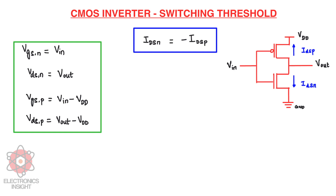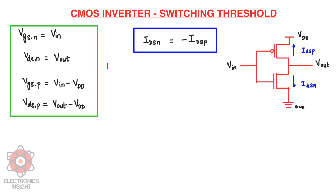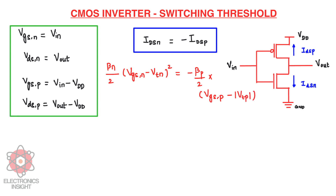Writing the drain-to-source current of NMOS in saturation: IDSN = (βN/2) × (VGSN − VTN)². Setting IDSN equal to IDSP, neglecting common terms, and taking the square root of both sides, we get: VGSN − VTN = √(βP/βN) × (VGSP − |VTP|).